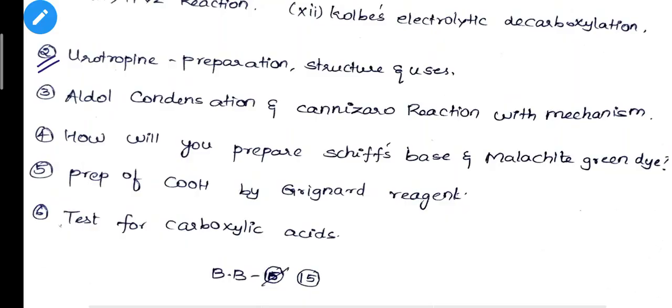The second question: Eutropic preparation, structure, and uses. This is very important — you will find it in the first question. This is very important for 3 marks, and sometimes for 5 marks.